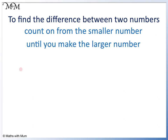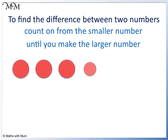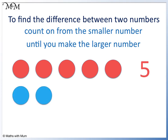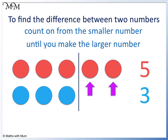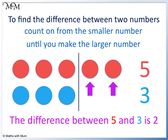Here we have 1 2 3 4 5 and 1 2 3. We can draw a line to see the difference. Counting on, we have 1 2. The difference between 5 and 3 is 2.